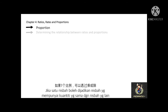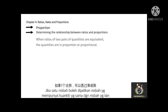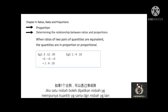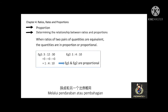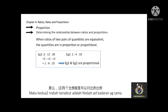Now let's move to proportion. When the ratio of two pairs of quantities are the same, the quantities are in proportion or proportional to each other. Looking at Example 1 — 3 to 12 to 30 — and Example 2 — 1 to 4 to 10: if we can transform all quantities in Example 1 by multiplying or dividing by the same number to get Example 2, then they are proportional. Dividing Example 1 by 3 gives 1 to 4 to 10, which equals Example 2. Therefore, they are proportional.